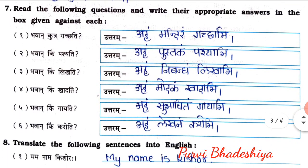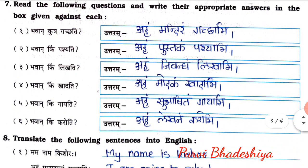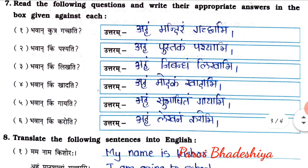Exercise number seven: read the following questions and write their appropriate answers in the box given against each. First: Bhavan Kutra Gatchati — Aham Mandiram Gatchami. Second: Bhavan Kim Pashyati — Aham Pustakam Pashyami. Third: Bhavan Kim Lakati — Aham Nibandham Likhami. Fourth: Bhavan Kim Khaadati — Aham Modakam Khaadami. Fifth: Bhavan Kim Gayati — Aham Shwasitam Gayami. Sixth: Bhavan Kim Karoti — Aham Likhnam Karomi.